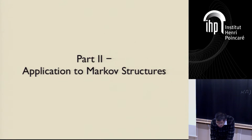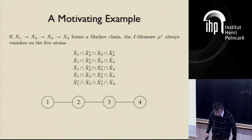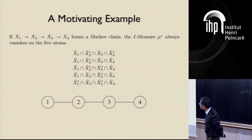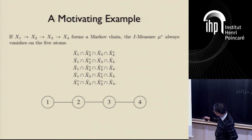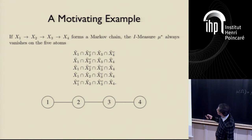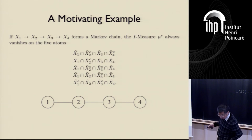Now comes the second part: Markov structures. This is a motivating example. Suppose we have a length-four Markov chain X1, X2, X3, and X4. I mentioned that the I-measure mu-star always vanishes on these five atoms. So let's take a close look at that.